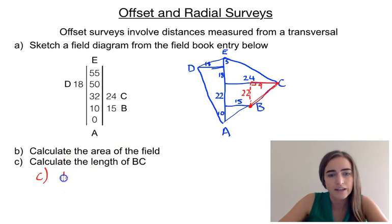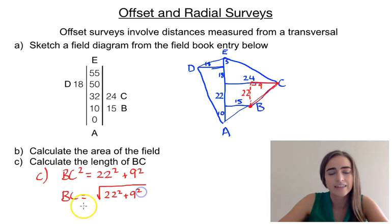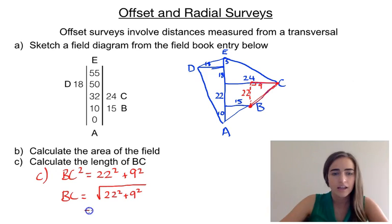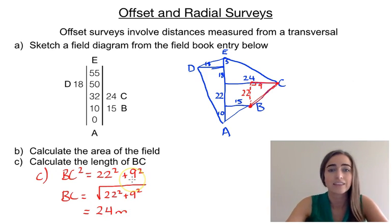So if we've got that as BC, so BC squared would be equal to 22 squared plus 9 squared. So then BC is going to be the square root of that whole thing. And you can figure that out in the calculator first if you'd like to. And that comes out to give us about 24 metres for the length of that side. So that's offset surveys.